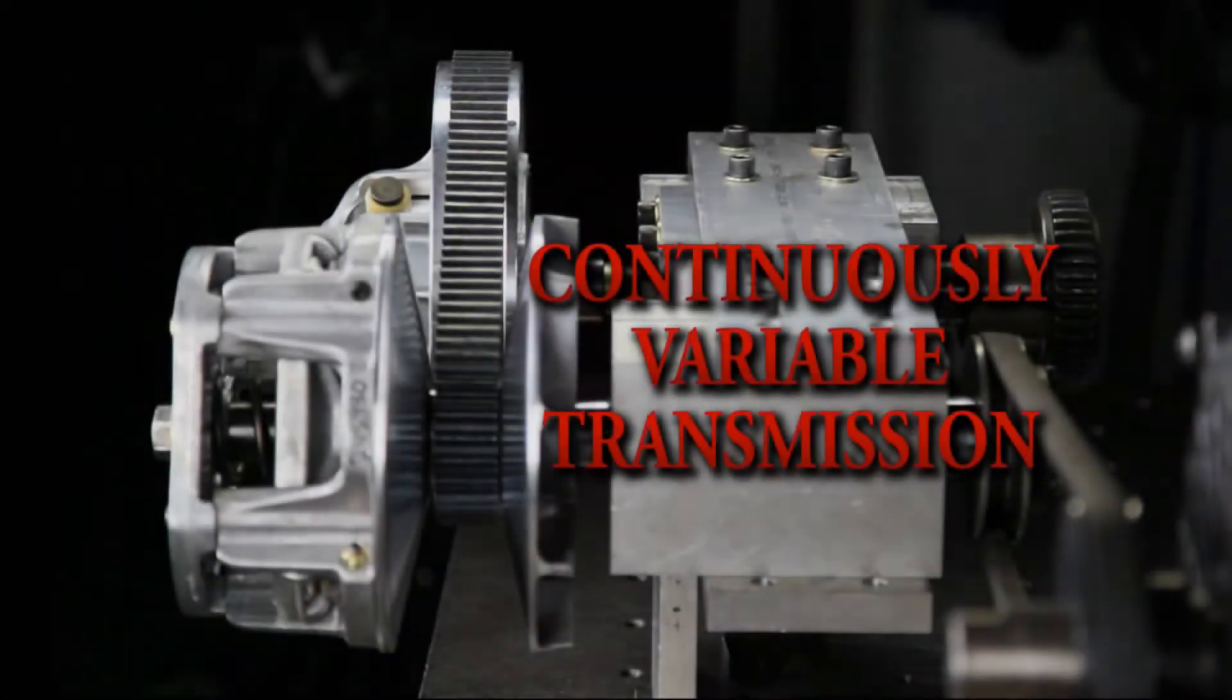A continuously variable transmission is an automatic transmission that varies ratio depending on vehicle speed, engine RPM, and load.